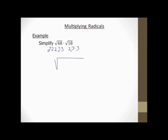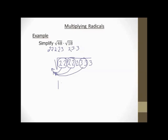Alright, so I can go ahead and start listing my prime factors. I have five 2s and then: there's a pair of 3s. I'm going to circle pairs of numbers since my index is 2. I'm going to bring one of each of those groups out. So out front I'm going to end up with 2 times 2 is 4, times 3 is 12. Square root of whatever is left over — 2 times 3 is 6. So my final answer here is 12 square root of 6.